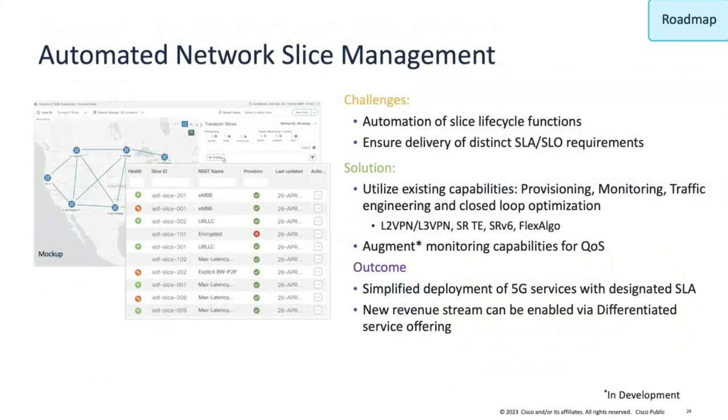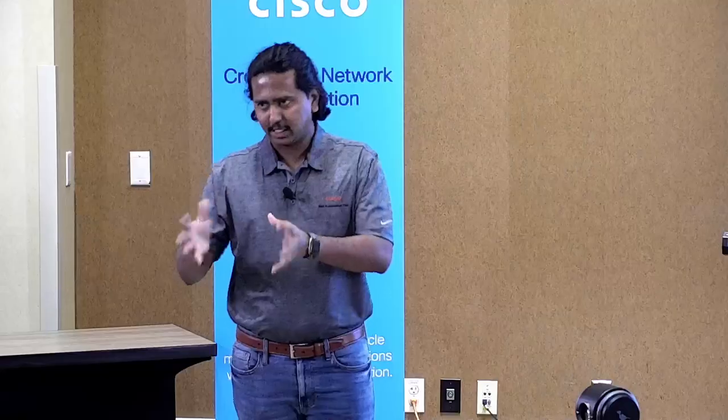I don't work in the service provider space, and I just want to make sure I understand — network slicing is essentially carving up available bandwidth, being able to dedicate a circuit to an end user without impacting anyone else across the same bandwidth. Is that correct? That's exactly right. Within the same transport network, how will you carve out your slices for a specific type of service meeting those SLA requirements?